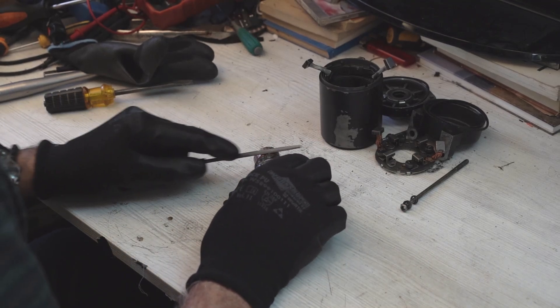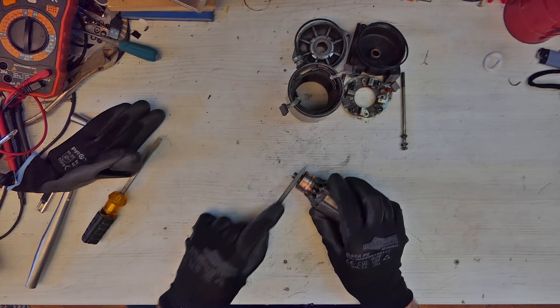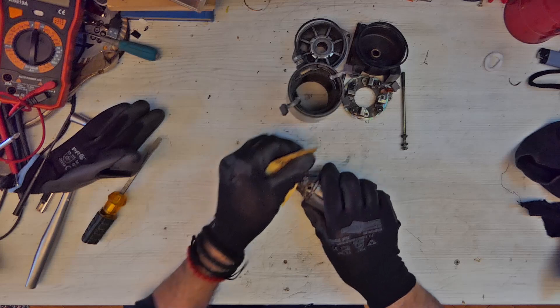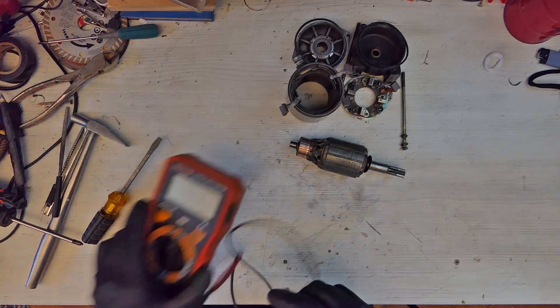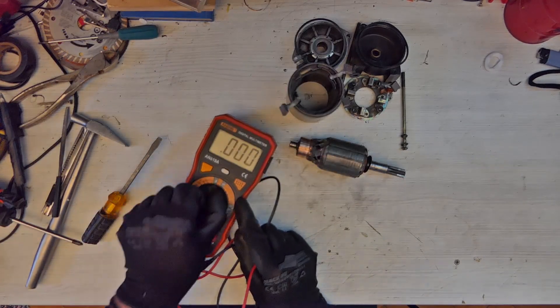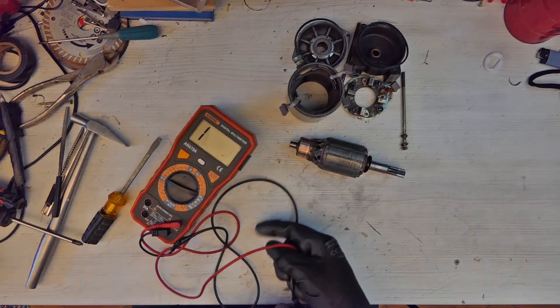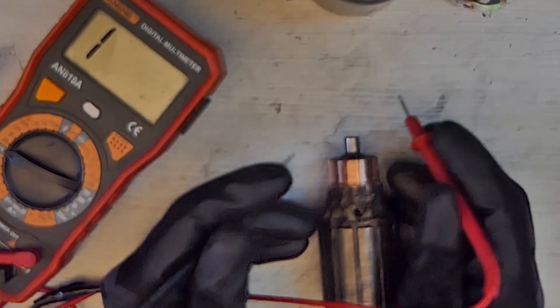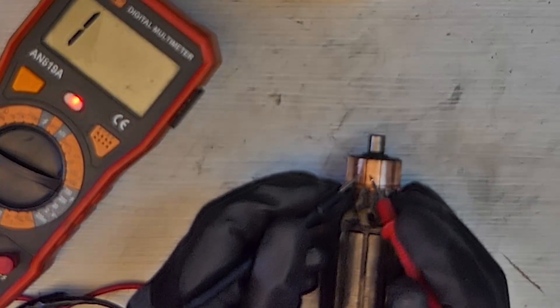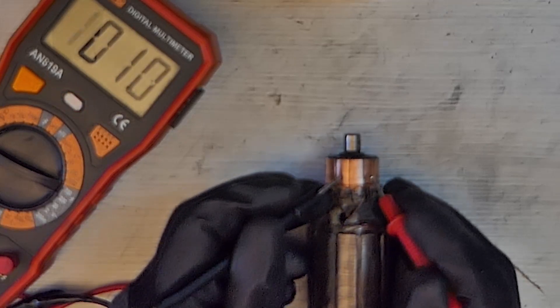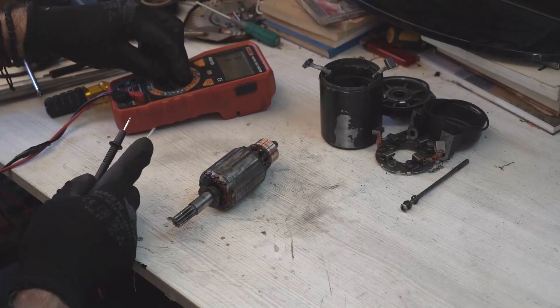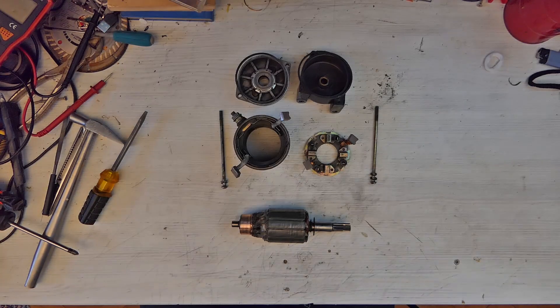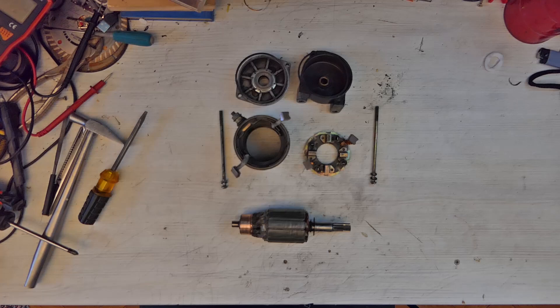We'll clean the commutator contacts with a fine file and then with fine sandpaper. After that, we'll use a multimeter to check if all the connectors have proper continuity. It's worth noting that the brushes in this model are replaced by soldering.